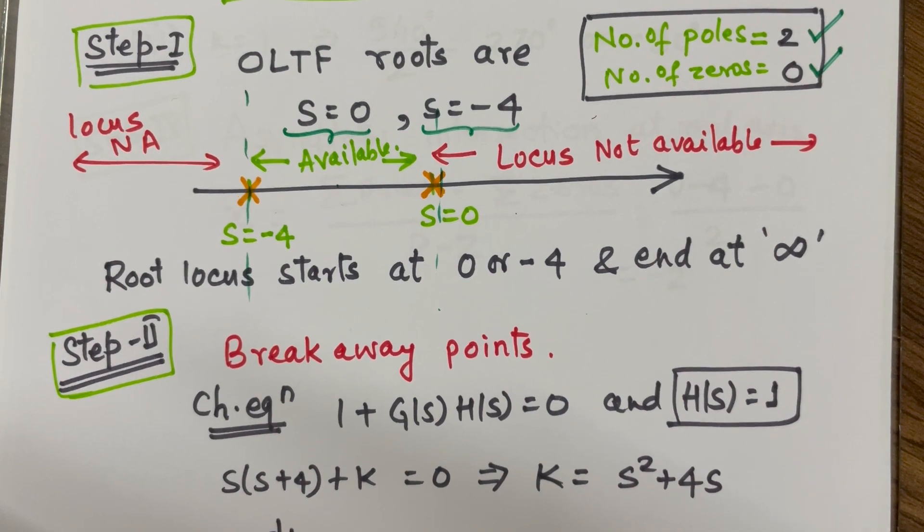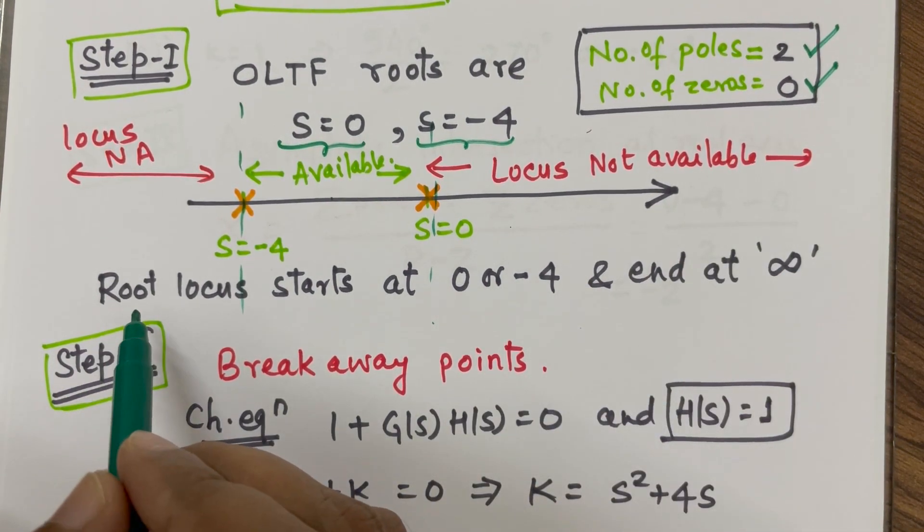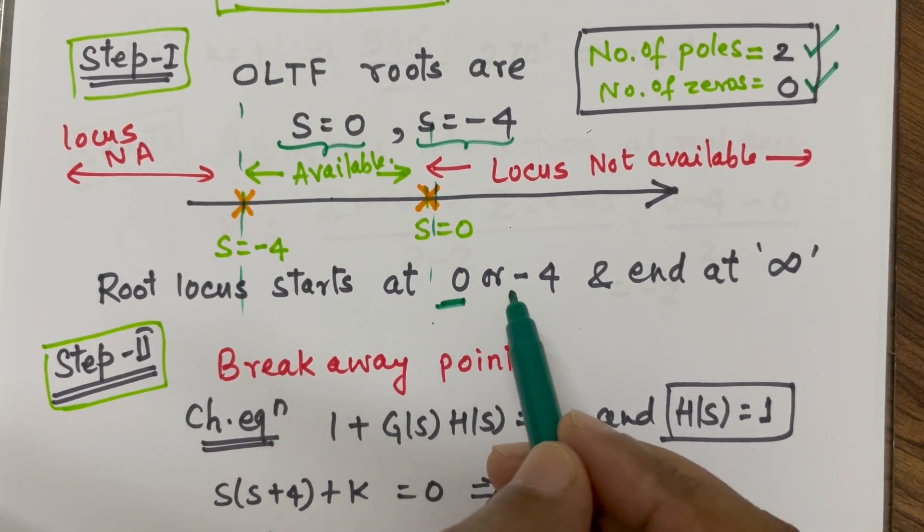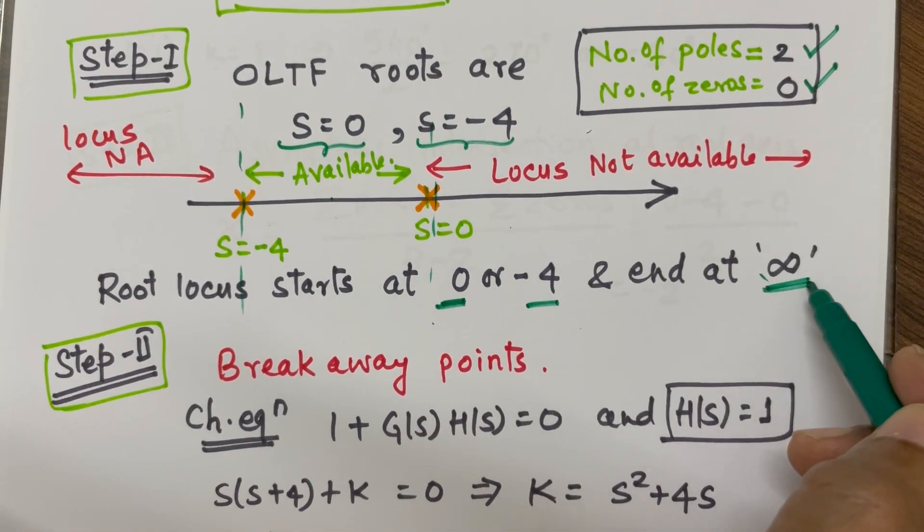Also, since there is no zeros, so all the root locus, all the branches will start at 0 or minus 4, but it will end only at infinity.